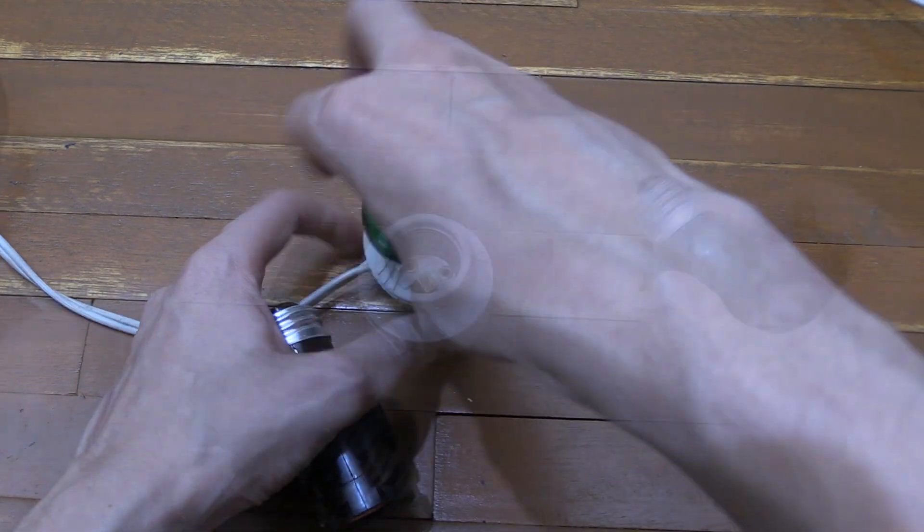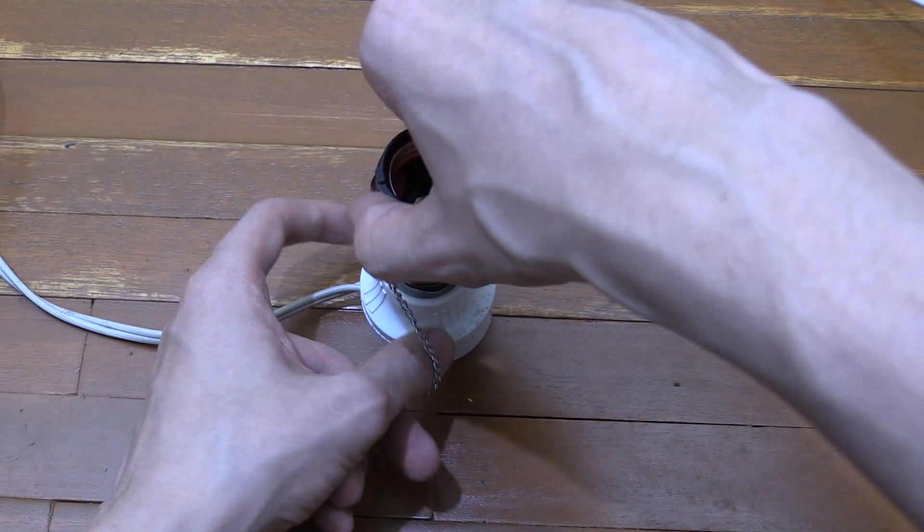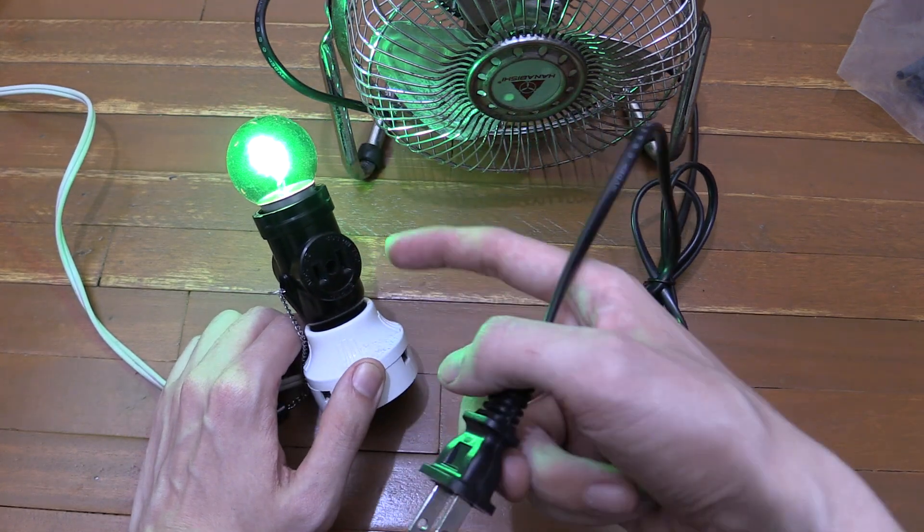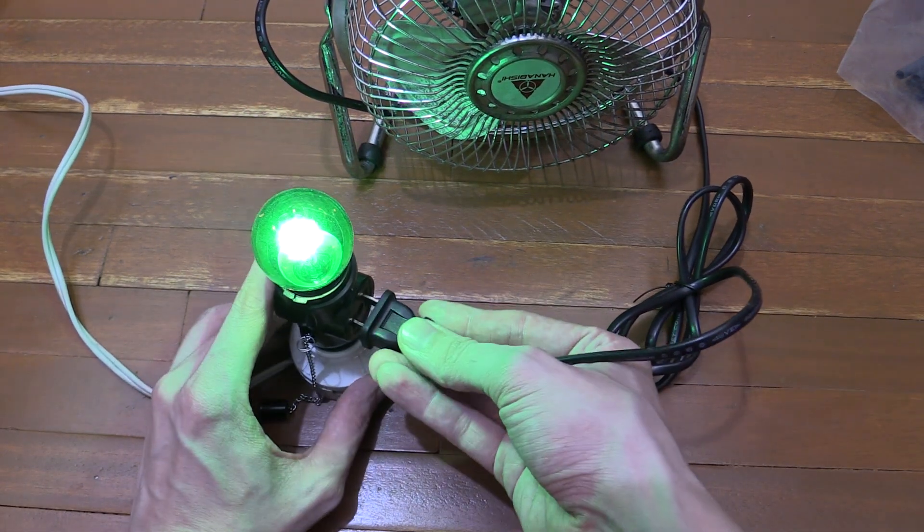So if I unscrew this bulb and then screw in our adapter, now not only do we have our light bulb but we also have an AC outlet where we can plug in small appliances like this fan for example.